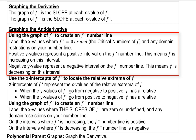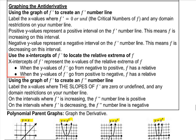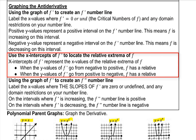Label the x values where f prime is equal to 0 or undefined, because those are critical numbers, and also any domain restrictions. Positive y values represent a positive interval on the f prime number line, which represents an increasing f function. Negative y values represent a negative interval on the f prime number line, which means f will be decreasing on those intervals. Use the x-intercepts of f prime to locate the relative extrema of f. If the f prime number line changes sign at a critical number, then that critical number is a relative extrema.